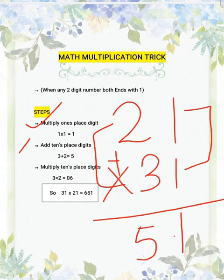And the third step is you need to multiply those. 2 into 3 gives you 6. So here we go, this is the answer.